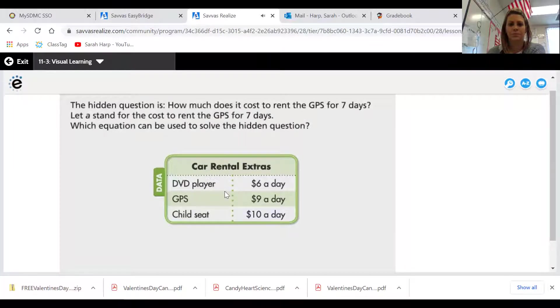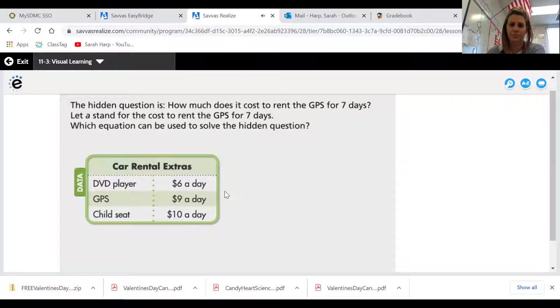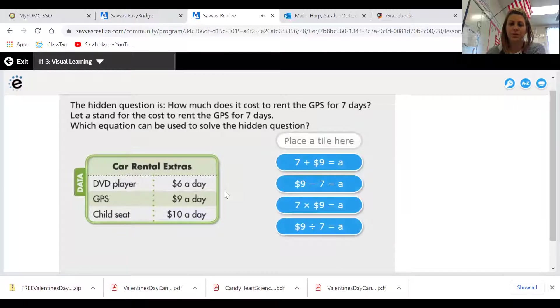The hidden question is, how much does it cost to rent the GPS for seven days? Let A stand for the cost to rent the GPS for seven days. Which equation can be used to solve the hidden question? Select your answer. Let's think about that.